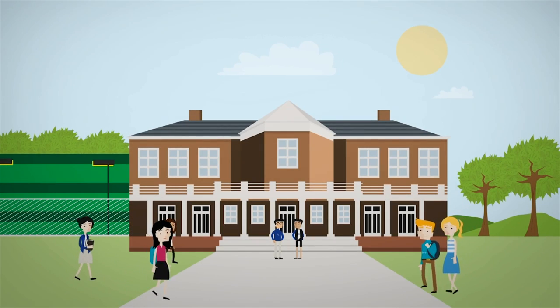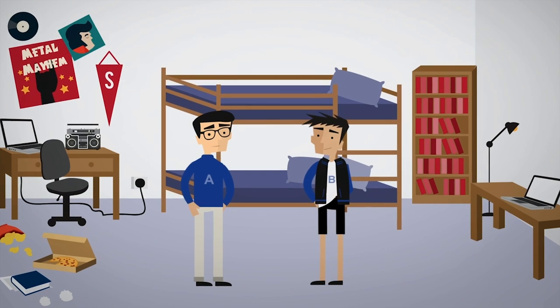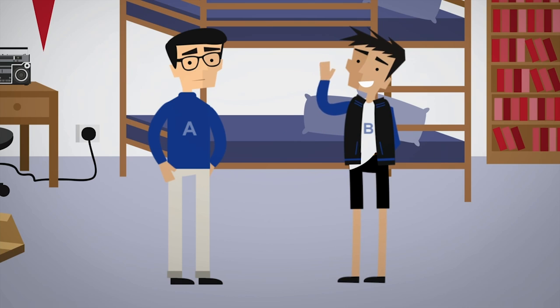Once upon a time, there were two college roommates who were very different from each other. Alvin, who was the intense Type A personality, and Brian, who was the mellow Type B.